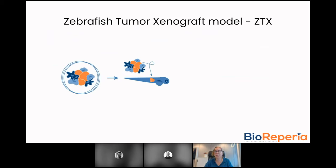Human tumor cells are implanted into the zebrafish embryo, and these injected tumor cells can then rapidly form a solid microtumor. The fast development of the embryo also enables rapid vascularization of this microtumor. Before they are implanted, the cells are dyed with a red fluorescent dye, which allows for in vivo monitoring of the implanted cells.